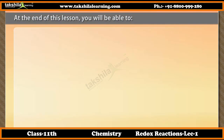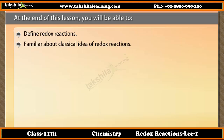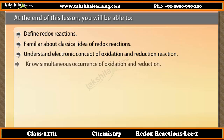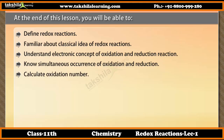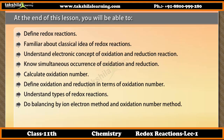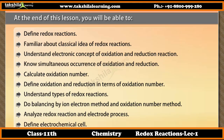At the end of this lesson, you will be able to: define redox reactions; be familiar with the classical idea of redox reactions; understand the electronic concept of oxidation and reduction reactions; know the simultaneous occurrence of oxidation and reduction; calculate oxidation number; define oxidation and reduction in terms of oxidation number; understand types of redox reactions; do balancing by ion electron method and oxidation number method; analyze redox reaction and electrode process; and define electrochemical cell.